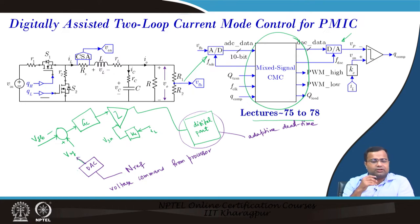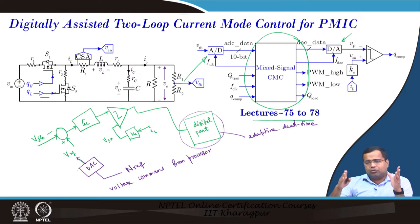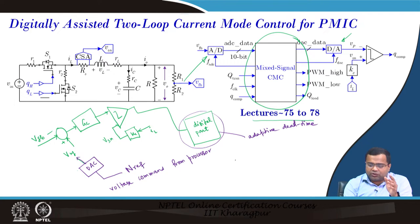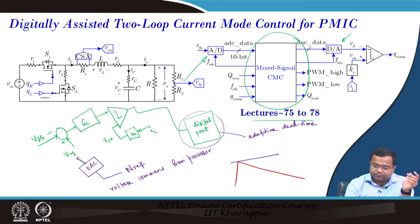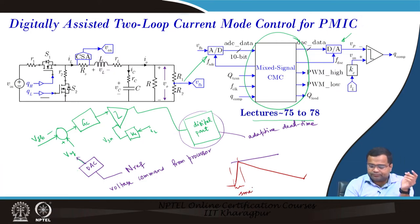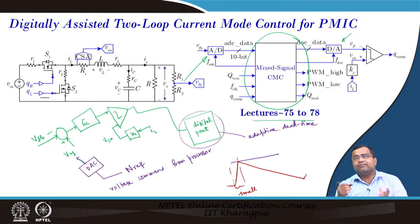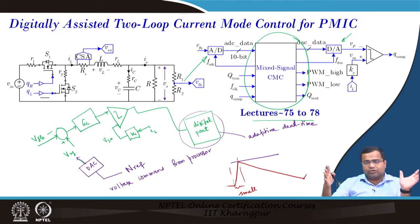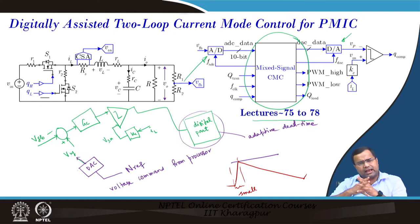However, current mode control has a problem for low duty ratio, high-frequency applications. For low duty ratio operation, peak current mode control is stable, but there can be implementation issues: if the duty ratio is very low, the on-time becomes extremely small — too small for any comparator action. In that case, variable frequency is needed; fixed-frequency peak current mode control is unstable at very low duty ratios, and adding excessive ramp compensation is not practically recommended.